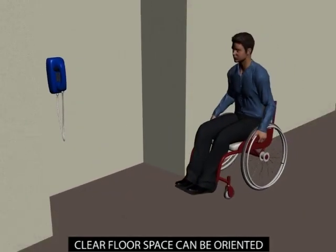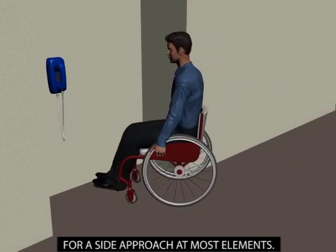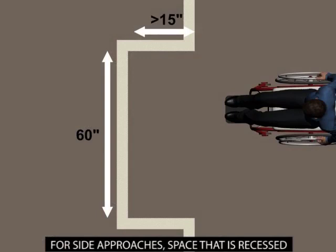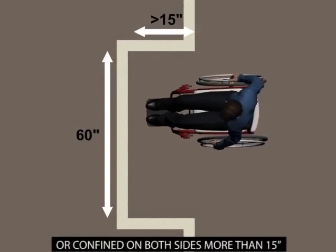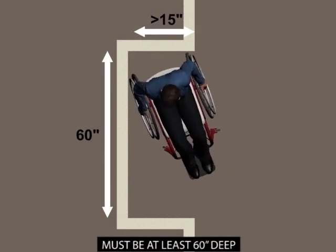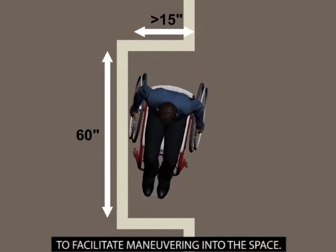Clear floor space can be oriented for a side approach at most elements. For side approaches, space that is recessed or confined on both sides more than 15 inches must be at least 60 inches deep to facilitate maneuvering into the space.